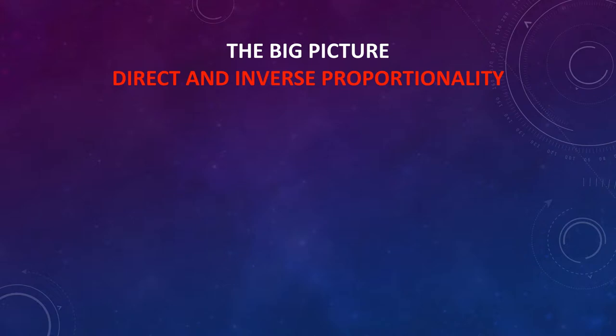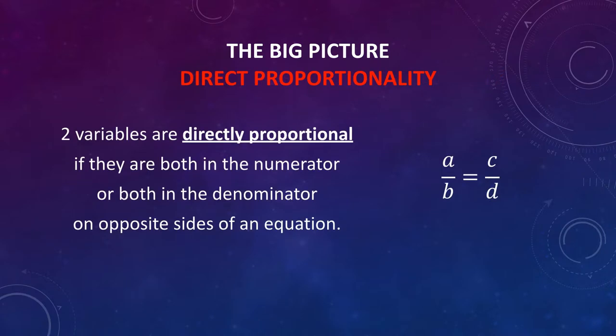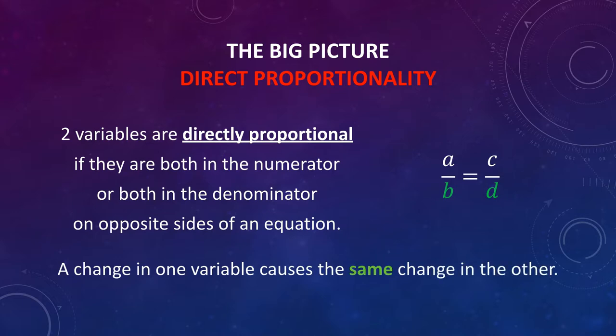Since this is our first important equation, let's talk about direct and inverse proportionality so that you understand what an equation is telling you without having to put in numbers. We say that two variables are directly proportional if they are both in the numerator or both in the denominator on opposite sides of an equation. If they are directly proportional, a change in one variable causes the same change in the other.